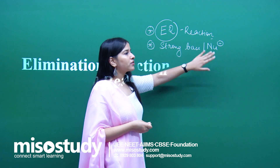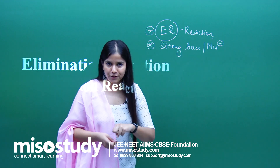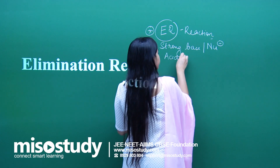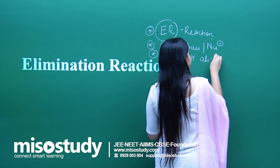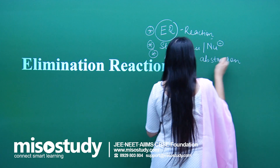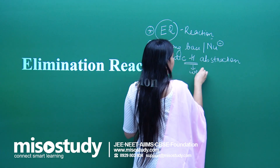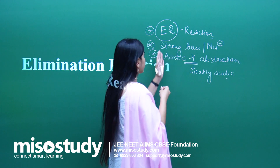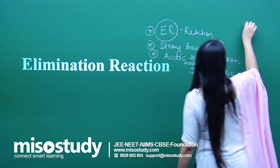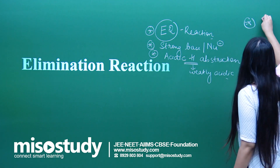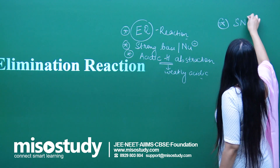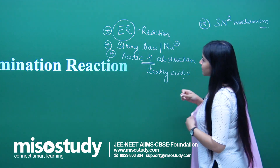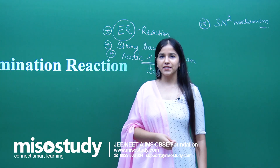The base has to be so strong that it is able to abstract the hydrogen — specifically a weakly acidic hydrogen. These are the key points. The fourth point is that it occurs via an SN2 mechanism, meaning in just one transition state the fate of the product is decided.